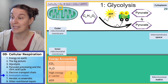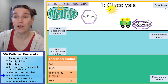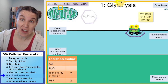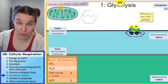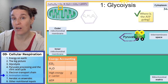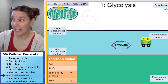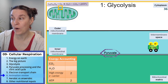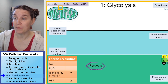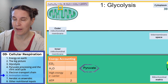Let's see what happens to those molecules. ATP is headed off to be used. Where are the electron cars headed? To the electron transport chain. And where is the pyruvate headed? To the mitochondrial matrix.